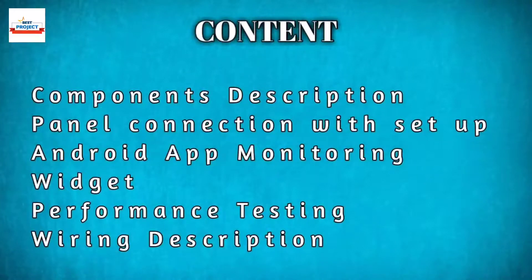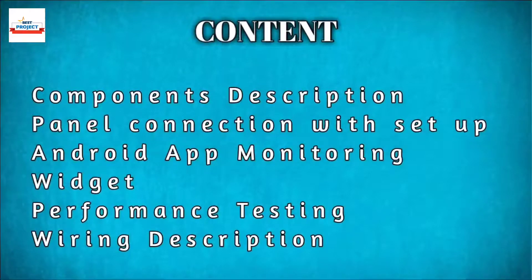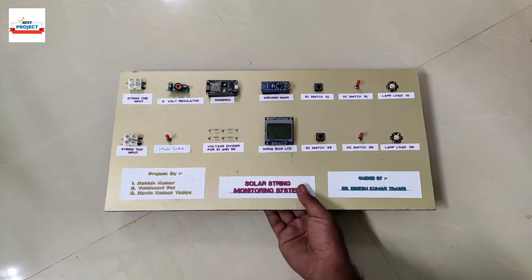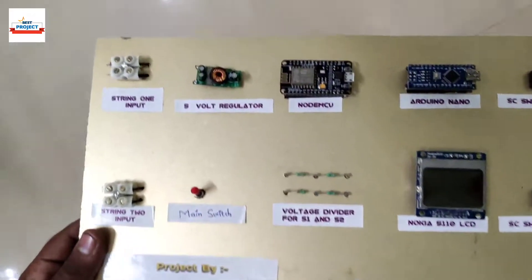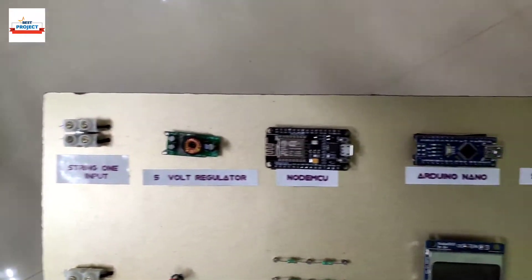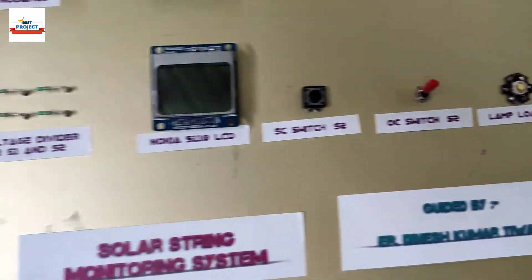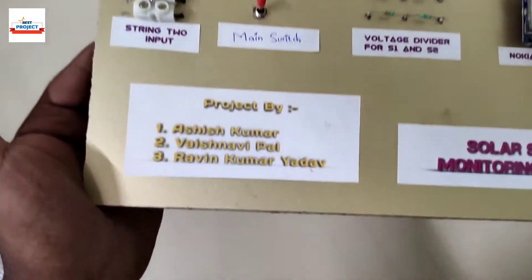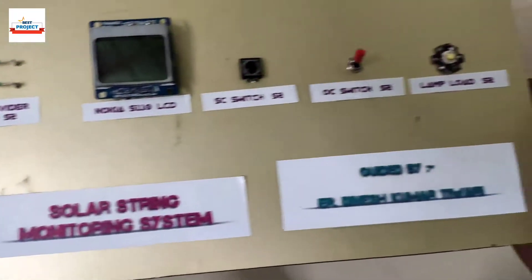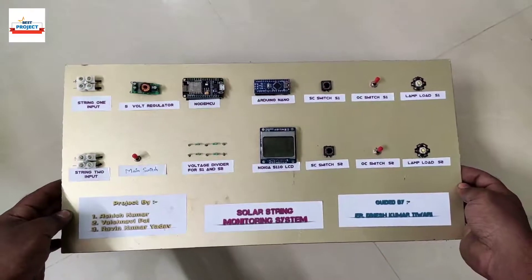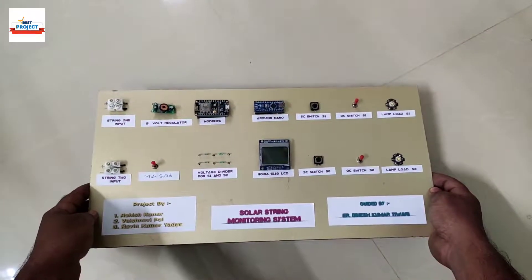Welcome to our channel Best Project. Today we will discuss the topic: IoT-based solar string fault detection system. Nowadays, the use of solar energy is increasing, and so is the risk of its maintenance. To reduce the maintenance efforts, we have implemented this project. Please watch the complete video for a better experience.